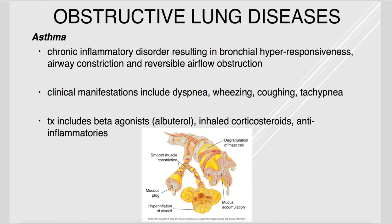Asthma is a very common chronic pulmonary disease characterized by hyper-responsiveness of the bronchi and bronchioles. When stimulated, they constrict and produce mucus plugs. Smooth muscle wrapping the airways constricts whenever irritated, and mucus plugs can cut off airways, causing hyperinflation — which can lead to rupture. Clinical manifestations include wheezing, chronic cough, increased respiratory rate, and shortness of breath. Treatment includes beta agonists like albuterol, inhaled corticosteroids like Advair, and anti-inflammatories like prednisone for acute asthma attacks.